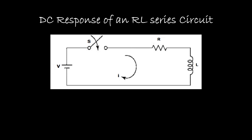Now let us discuss the DC response of an RL series circuit. This is a simple RL series circuit and we need to assume that the inductor is initially uncharged, meaning the current through the inductor is zero — initial current is zero. When switch S is closed, we get a closed path. At that point of time, we apply KVL: V = Ri + L·(di/dt), where Ri is the voltage drop across the resistor and L·(di/dt) is the voltage drop across the inductor. This equation can be simplified by dividing the entire equation by L.